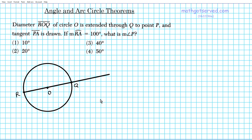Now that we have point P, we shift our attention to the tangent piece. Tangent PA is drawn, so we have a tangent line from point P to point A, where point A is the point of tangency between the line and the circle. Now that we have a sketch of the situation, let's go ahead and start populating the measures.